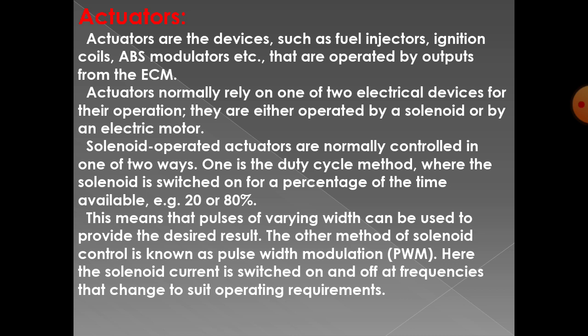Actuators normally rely on one of two electrical devices for their operations — they are either operated by solenoid or by an electric motor. Solenoid-operated actuators are normally controlled by one of two ways. One is the duty cycle method, where the solenoid is switched on for a percentage of the time available — for example, 20 or 80 percent — meaning pulses of varying width can be used to provide the desired result. The other method of solenoid control is known as pulse width modulation, where the solenoid current is switched on and off at frequencies that change to suit operating requirements.